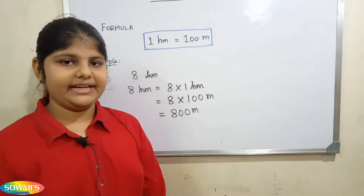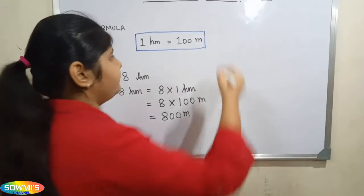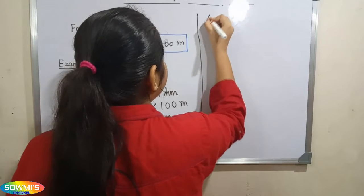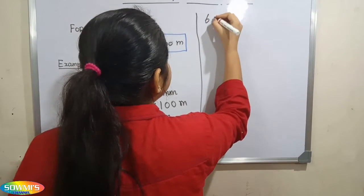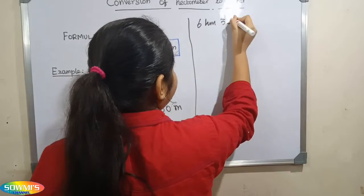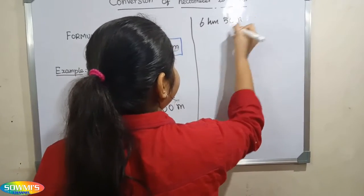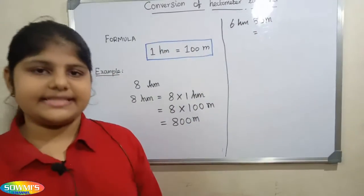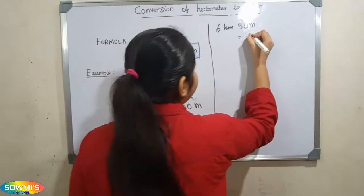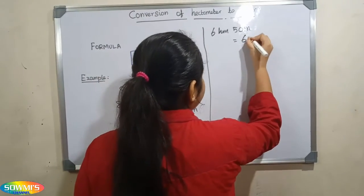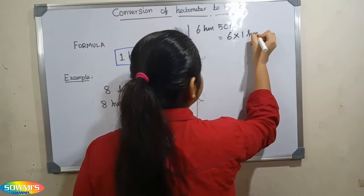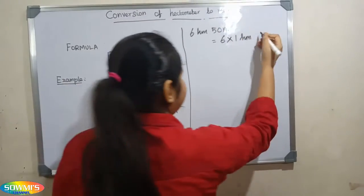Let us take another example. 6 hectometer 50 meter. 6 hectometer can be written as 6 multiplied by 1 hectometer plus 50 meter.